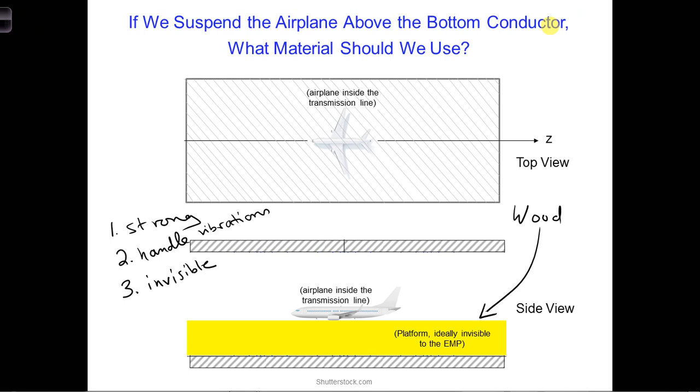If you studied the electrical characteristics of wood over our frequency range, you would find that the relative permittivity of wood is on the order of 2, and the conductivity is on the order of 1e to the minus 15 Siemens per meter.